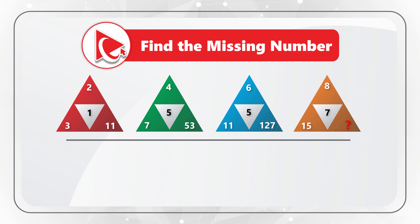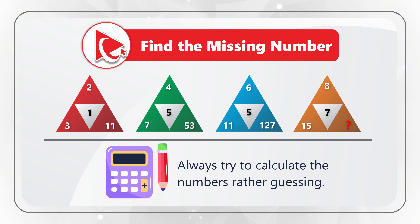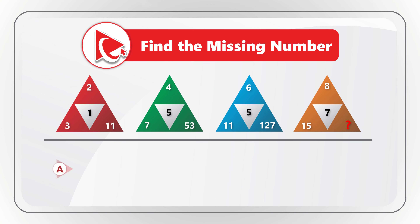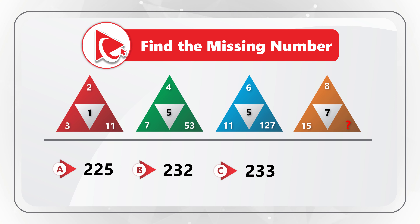One tip: you do not need to guess the number but rather you need to calculate it, and you need to select the calculated number out of four different choices. Choice A: 225, Choice B: 232, Choice C: 233, and last but not least Choice D: 240.